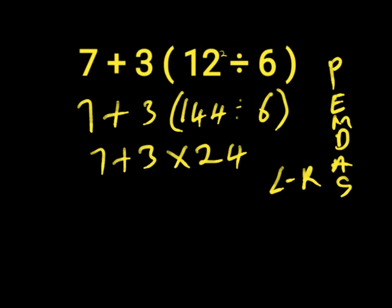Here we have an addition and a multiplication. We first of all work with our multiplication because it comes first before addition. 3 times 24 will give us 72.